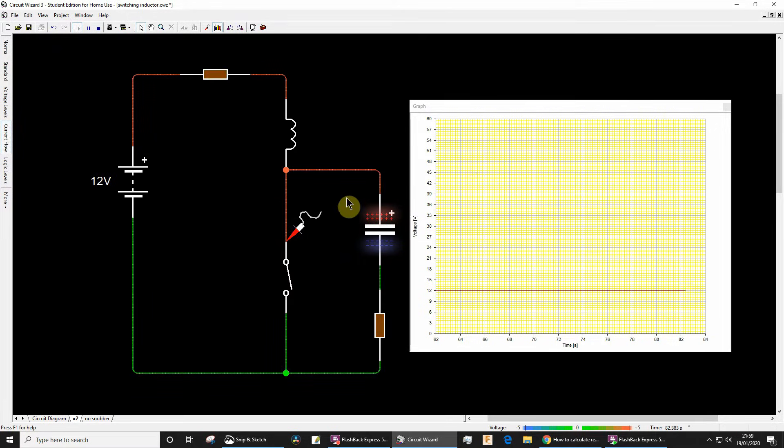Just before we stop this part of the simulation, let's view the current. Now our capacitor's charged up. Close the switch - that capacitor can discharge, current can flow normally, so the snubber network has no effect when the switch is closed. But then when we open it, it can absorb the energy.